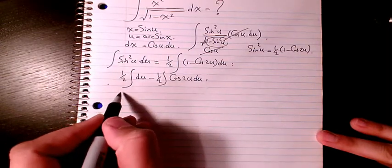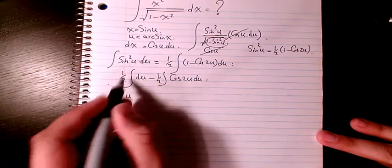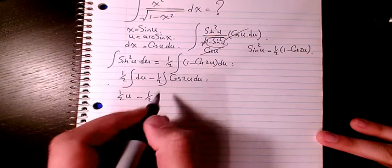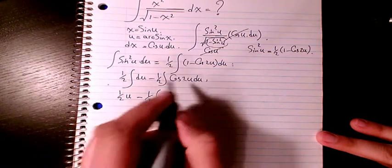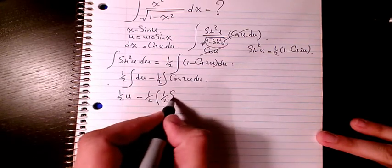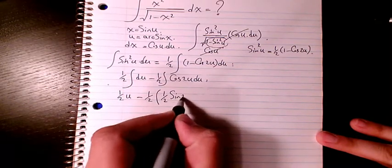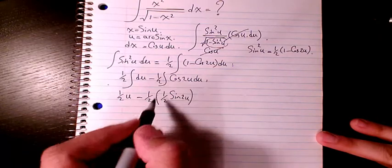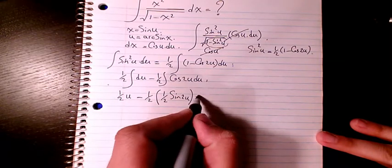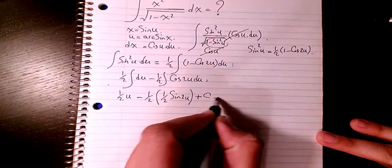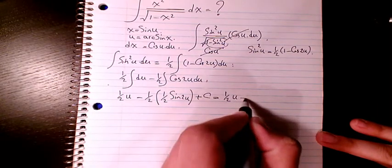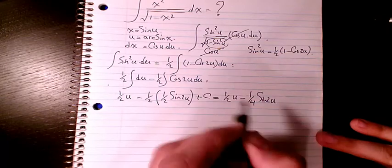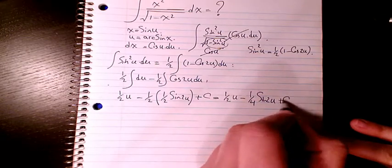So the integration of the first part is going to be 1 over 2 u, and the integration of the second part is going to be 1 over 4 sine 2u, giving us 1 over 2 u minus 1 over 4 sine 2u plus C.